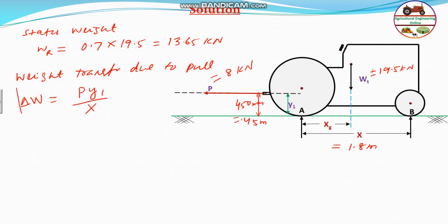This is very simple if you know the weight transfer and the pull is straightforward horizontal. If any angle is there then that will be p y1 cos theta or cos alpha, but in this case it is straightforward horizontal parallel drawbar pull, therefore it is very straightforward.